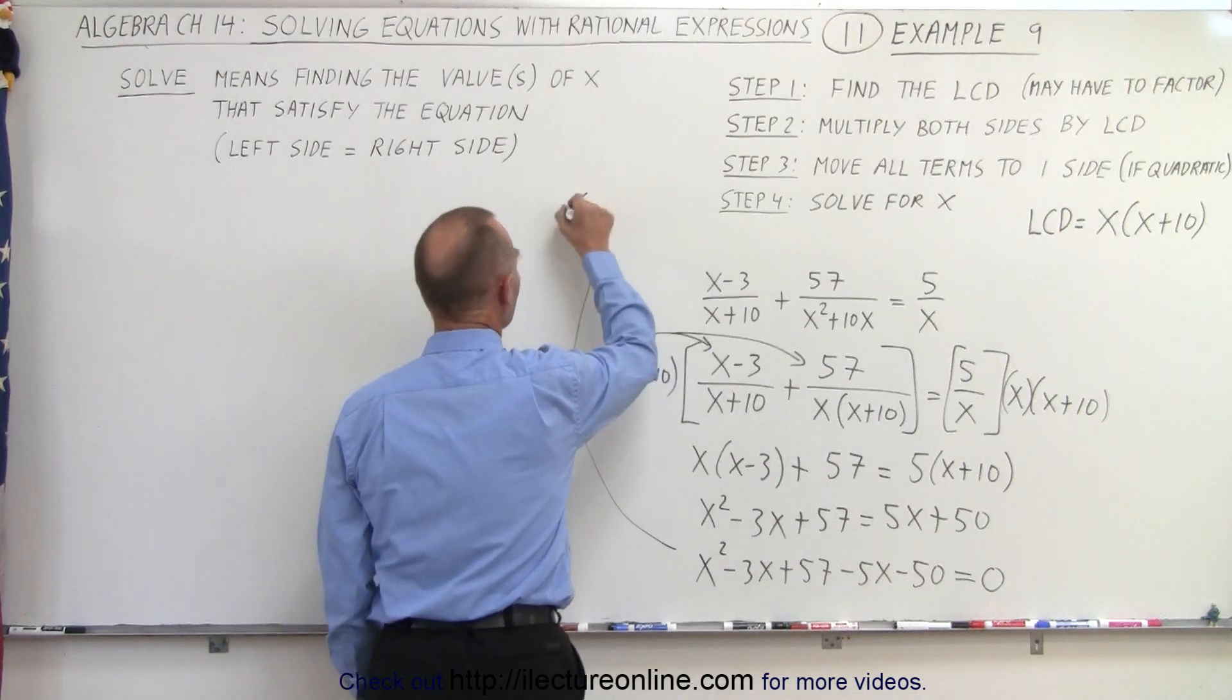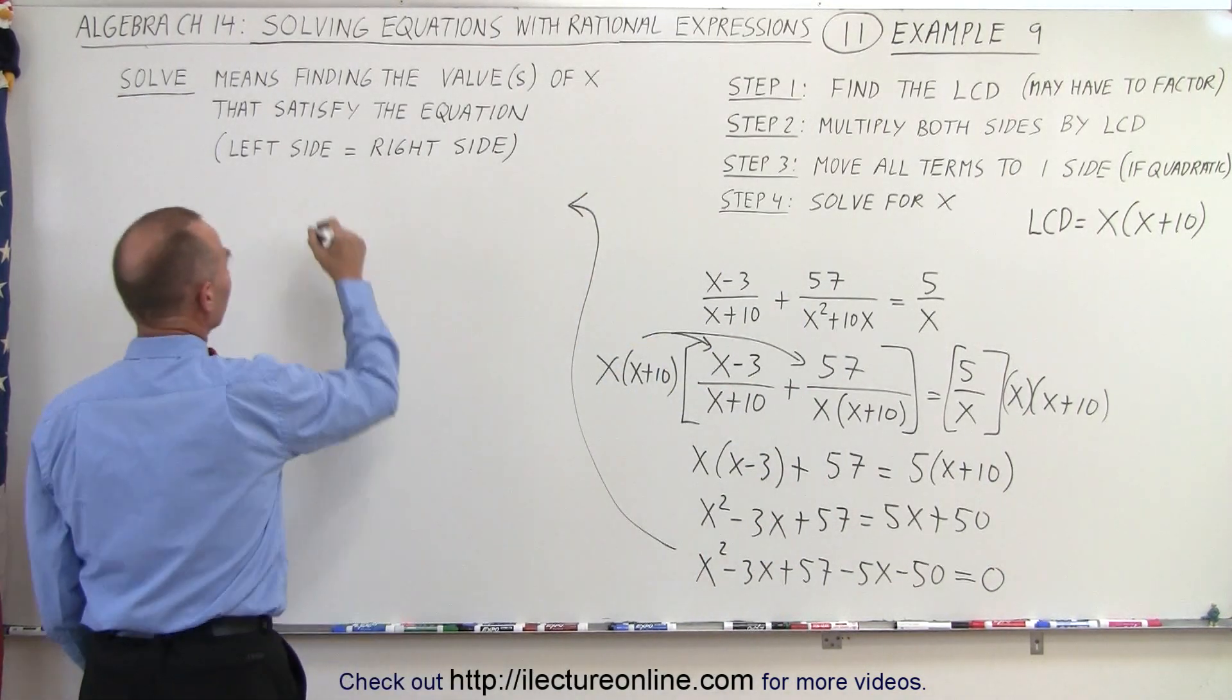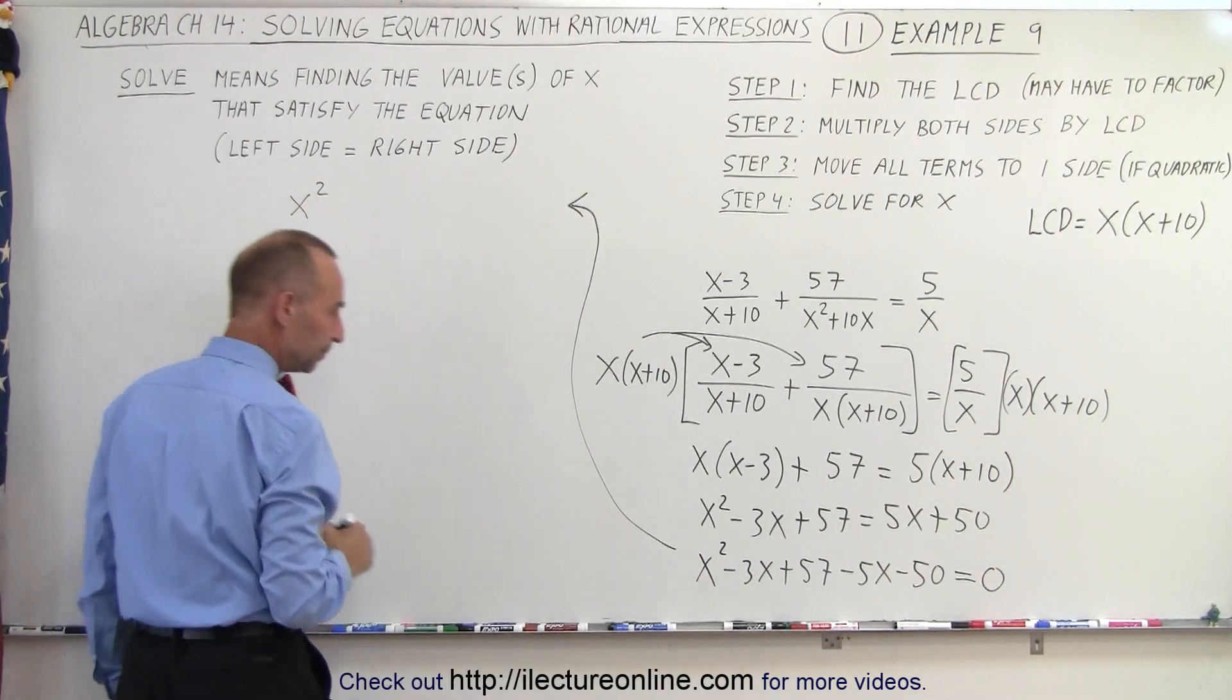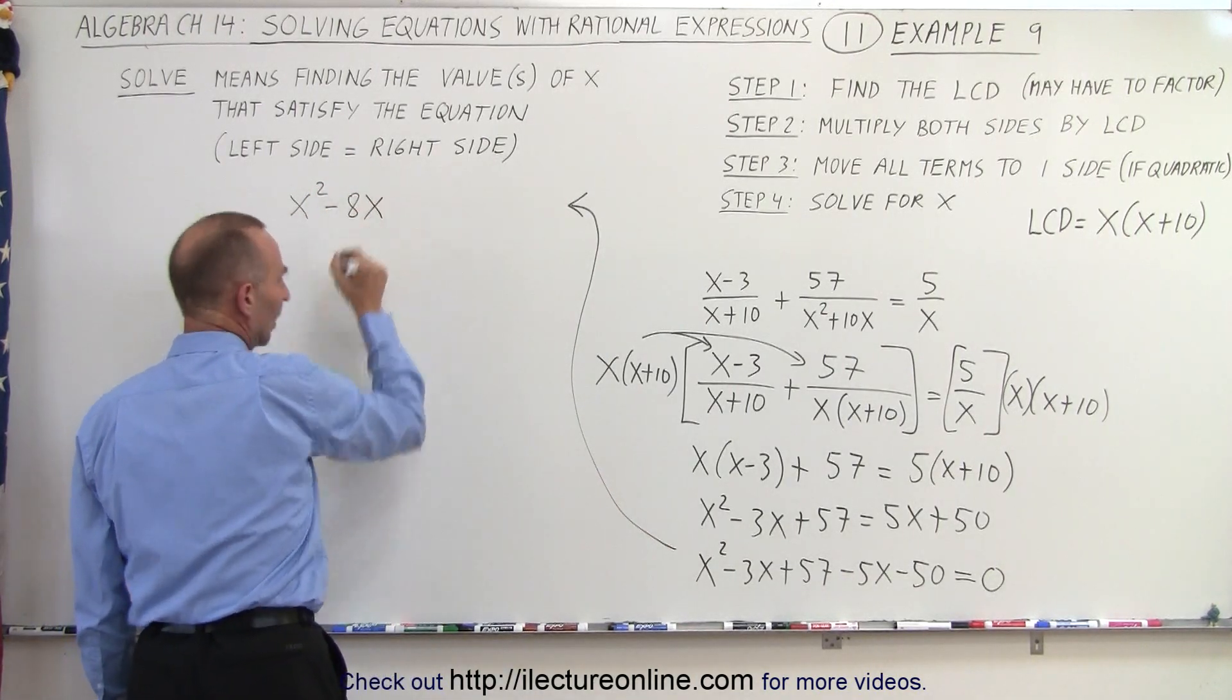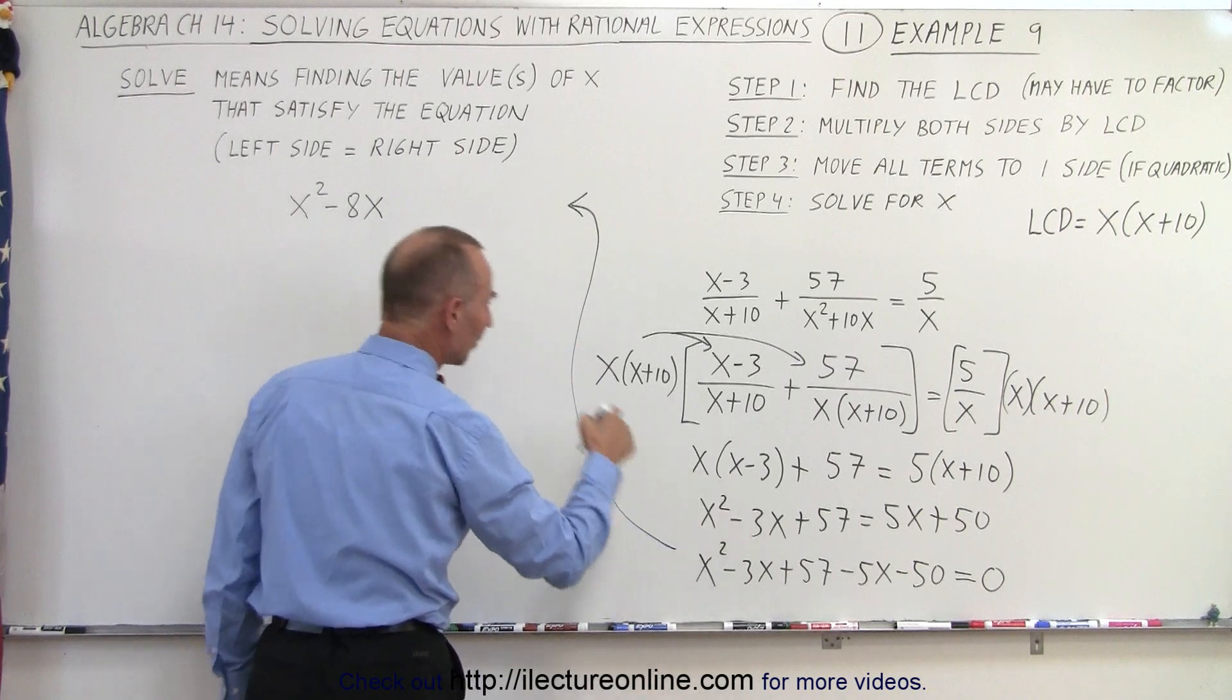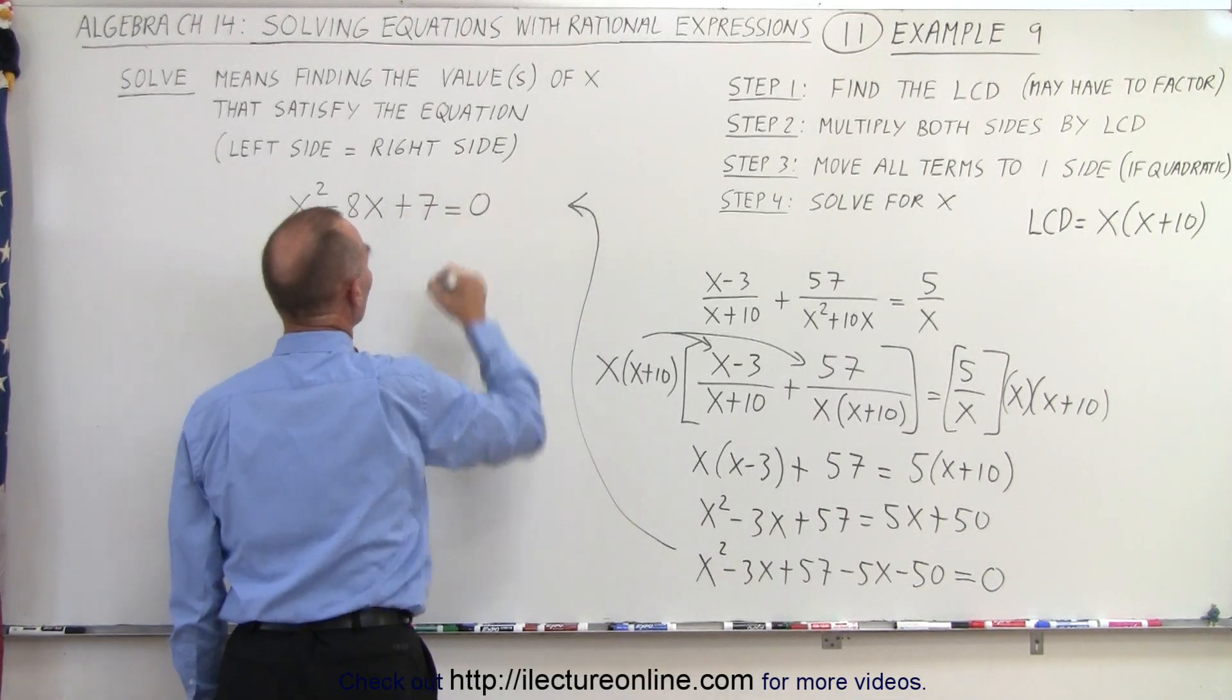And then over here we're going to collect all common terms. So we have x squared minus 3 minus 5, which is minus 8x. And plus 57 minus 50 is plus 7, equal 0.